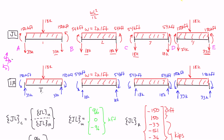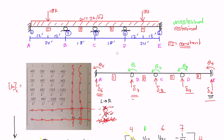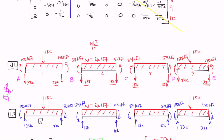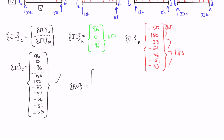For element 1, which is right here, we look back to our degree of freedom diagram. Element 1 has degrees of freedom 4, 1, 6, and 7. Notice that 4 and 1 are moments — they support moments — and 6 and 7 are degrees of freedom that support vertical shears. So in the Fm column vector, we write in order 4, 1, 6, 7: fixed moment, fixed moment, fixed shear, fixed shear.